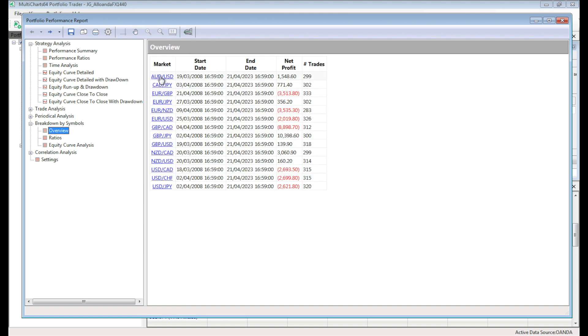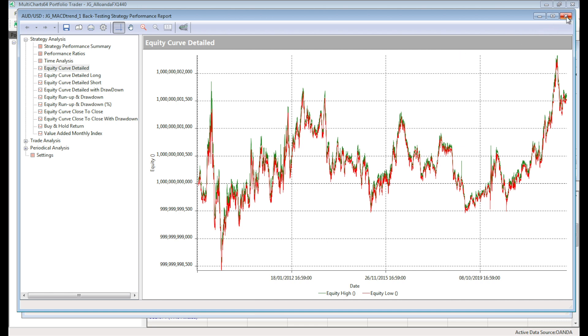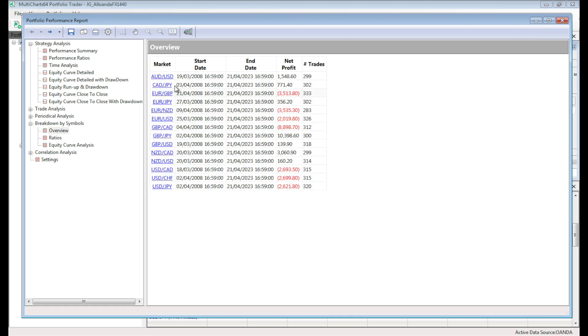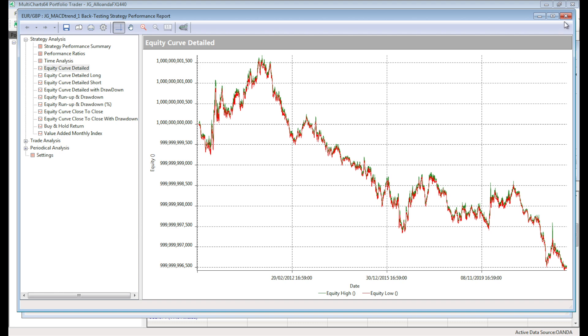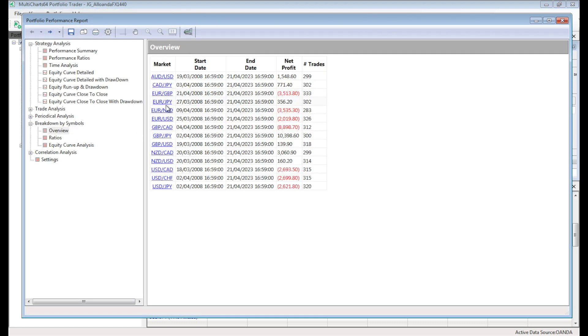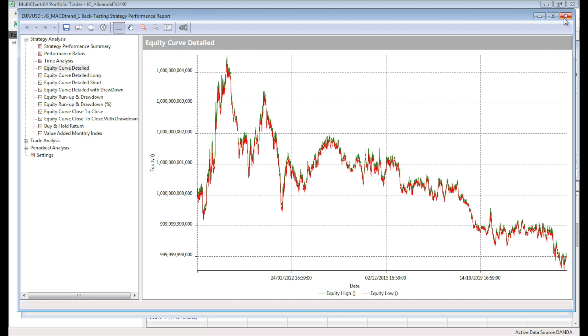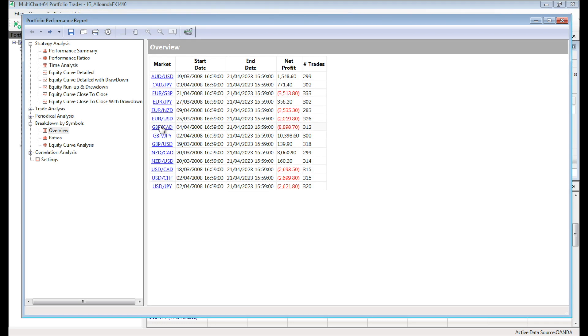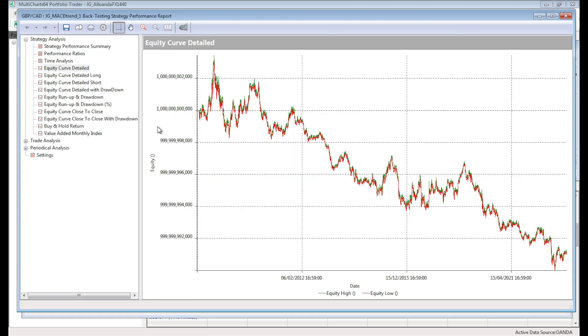Australian dollar, US dollar making a little bit of money. Equity curve is not great. Canadian, Japanese yen not really doing much this time. Euro, pound losing quite a lot. Euro, Japanese yen not really doing a lot. Euro, New Zealand dollar losing with a bad or inconsistent equity curve. Euro, dollar bad equity curve losing money. Pound, Canadian dollars losing a lot of money. In quite a nice fashion, it's losing a lot of money.